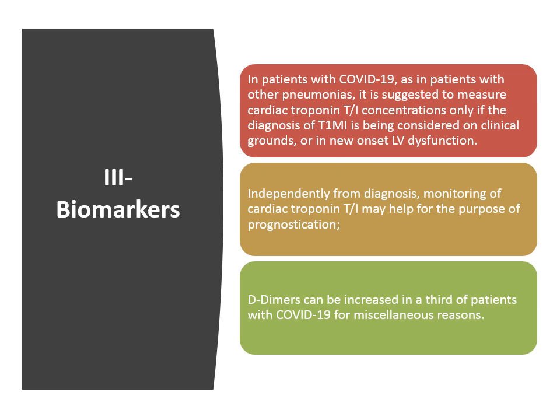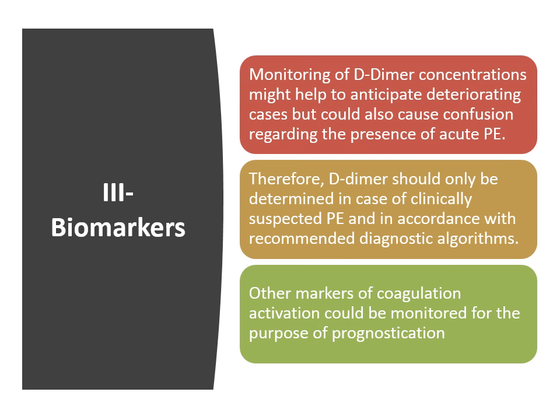D-dimer can be increased in one-third of patients with COVID-19 for miscellaneous reasons. Monitoring of D-dimer concentrations might help to anticipate deteriorating cases, but can also cause confusion regarding the presence of acute pulmonary embolism. Therefore, D-dimer levels should be interpreted in the context of clinical presentation. Other markers of coagulation activation could be monitored for prognostication.